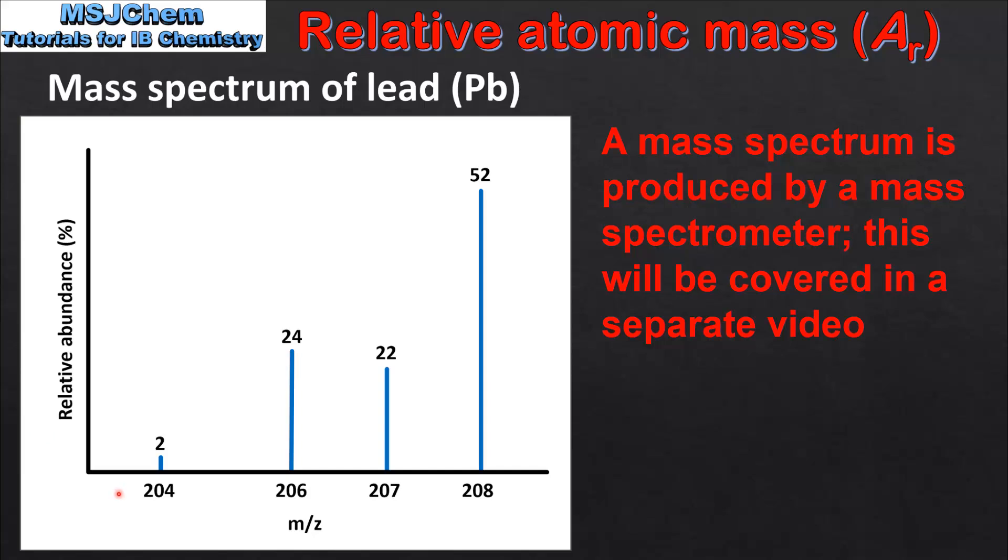So this mass spectrum shows there are 4 naturally occurring isotopes of lead which are lead 204, lead 206, lead 207 and lead 208 and the relative abundances are 2%, 24%, 22% and 52% respectively.